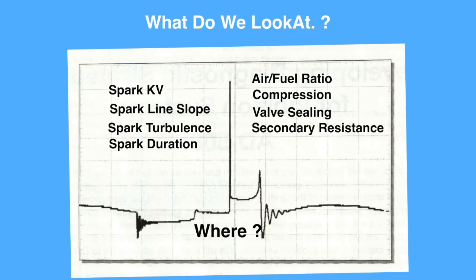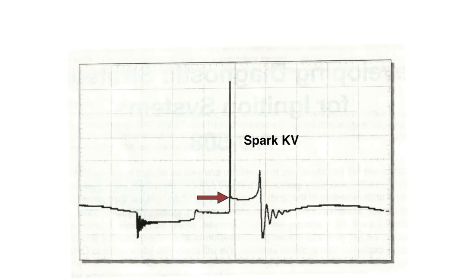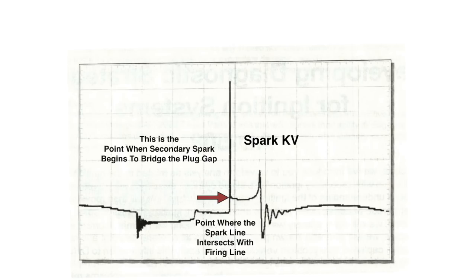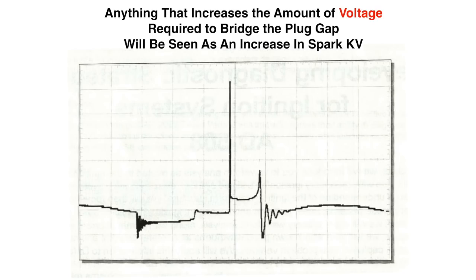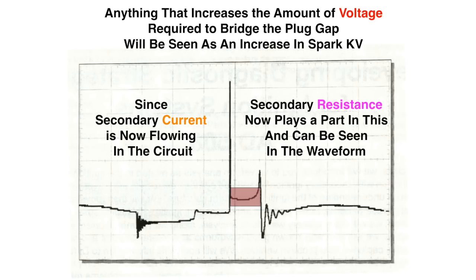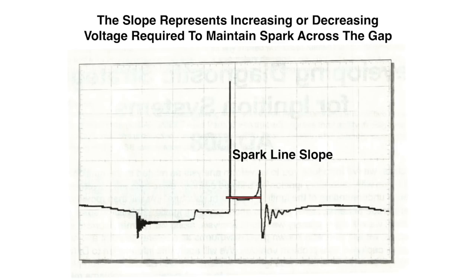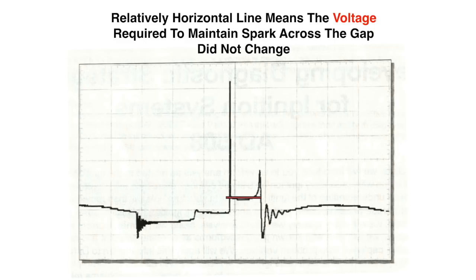This red arrow indicates the spark kV — the point where the spark line intersects with the firing line. This is the point where the secondary spark begins to bridge the spark plug gap and secondary current begins to flow. This is the firing kV at the top and the spark kV at the bottom — notice the difference. Anything that increases the amount of voltage required to bridge the spark plug gap will be seen as an increase in spark kV. Since secondary current is now flowing, secondary resistance now plays a part, and you can see it in the slope line.